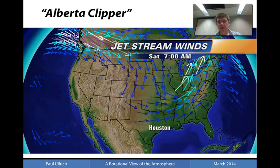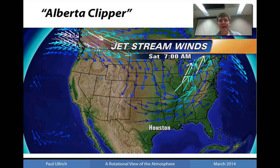This is also known as an Alberta Clipper — for those of you who live in the Midwest — where you see very cold Arctic air basically drawn to the south as a consequence of the diving jet stream in this vicinity. And the reason for the diving jet stream is due to the presence of mountains and a decreased column height, which leads to a southward dive in fluid columns in order to conserve potential vorticity.